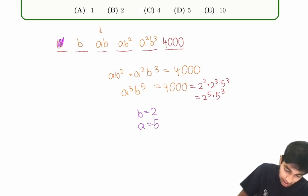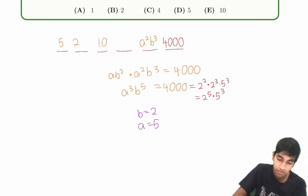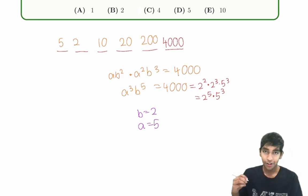If B equals 2 and A equals 5, then this will be 5, 2. And then that will make this term 10. And that will make this term 20, which will make this term 200. And then 200 times 20 is 4,000. Aha! So this does work.